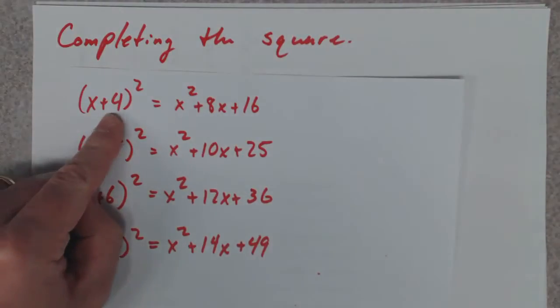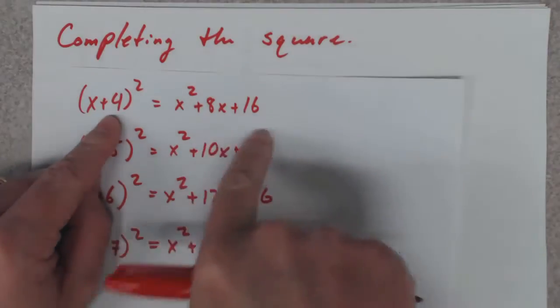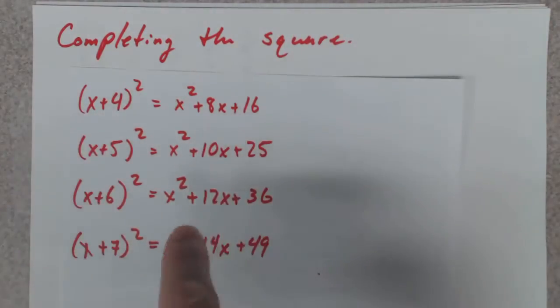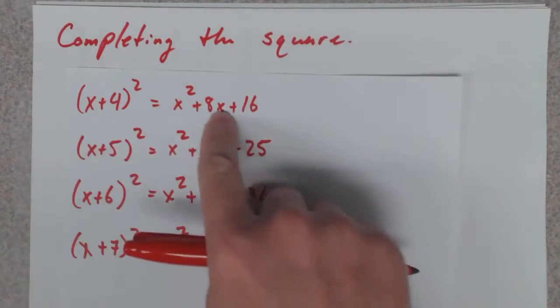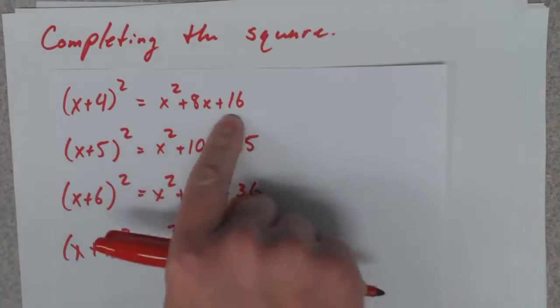I've got a video on this. Follow the link and you'll see why this works. But there's a shortcut that if you've got x plus 4 squared, you double this number to get that guy, and you square it to get this guy.